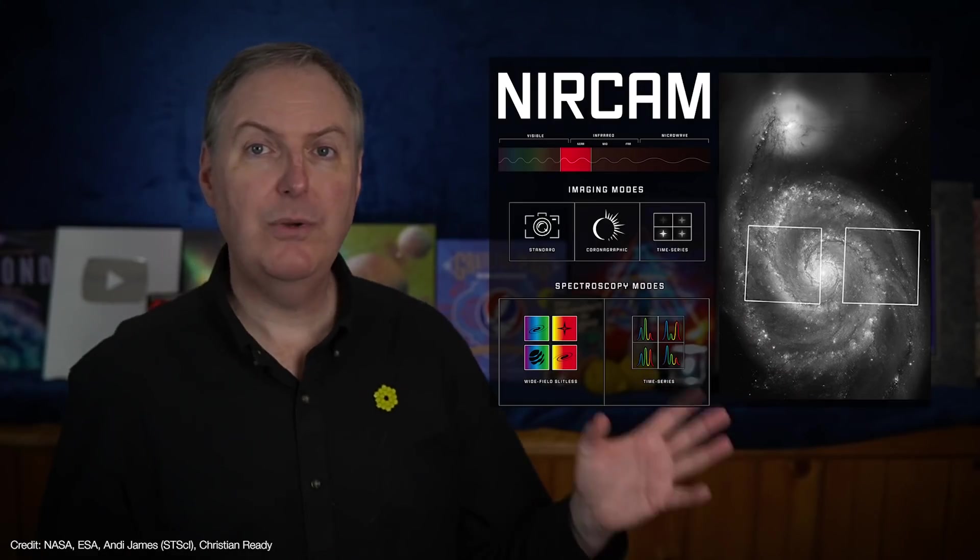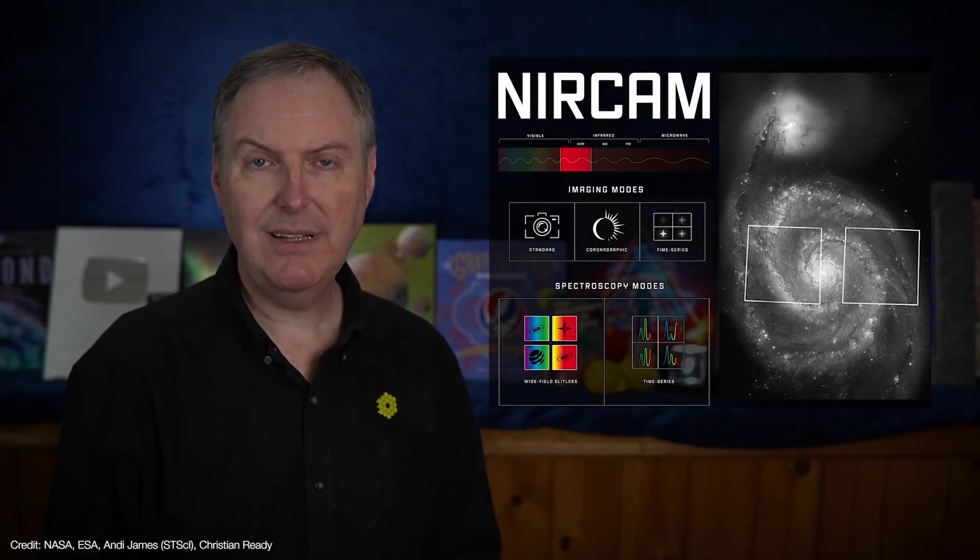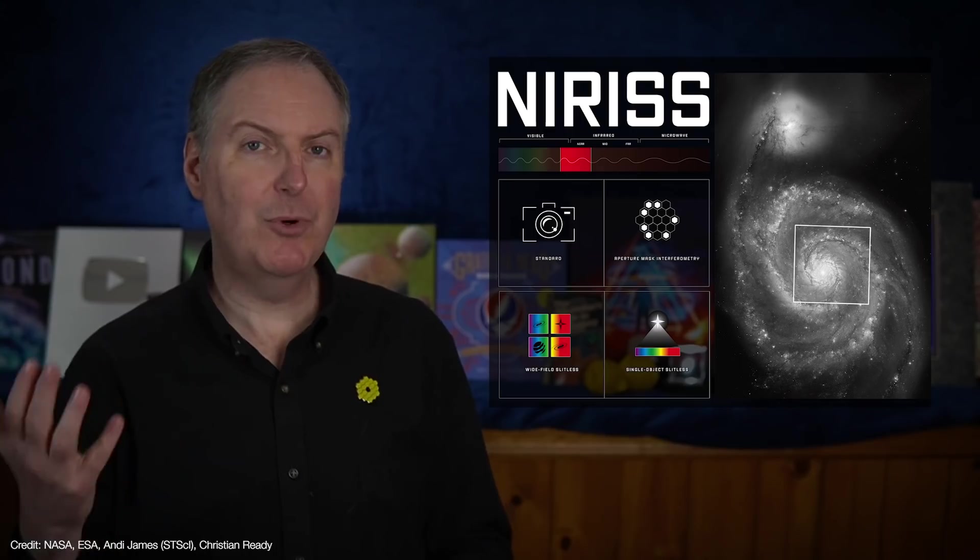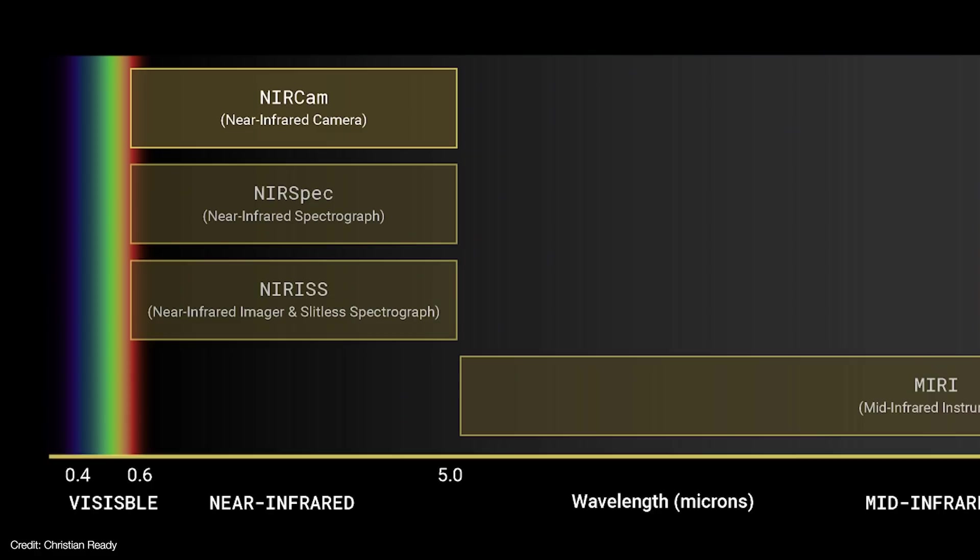Now earlier we talked about how NIRCam is the main camera with some spectroscopic capability. Well NIRISS is a high performance spectrograph with some imaging capability. NIRISS covers the same wavelength range as NIRCam and NIRSpec, but its spectroscopy modes were designed for two very specific purposes.